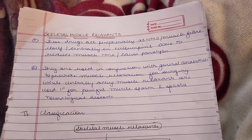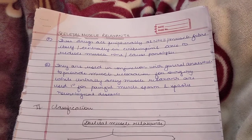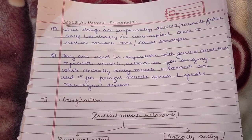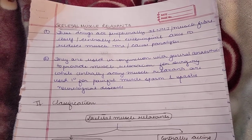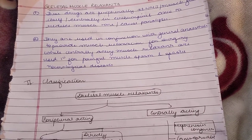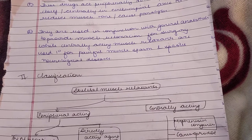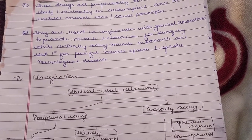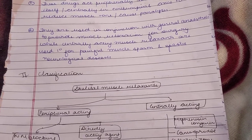Skeletal muscle relaxants are drugs which peripherally act on the neuromuscular junction or the muscle fiber itself, or centrally on the cerebrospinal axis, to reduce muscle tone — that is, to cause paralysis. They are used in conjunction with general anesthetics to provide muscle relaxation for surgery, while the centrally acting muscle relaxants are used primarily for painful muscle spasms and spastic neurological diseases.